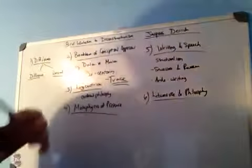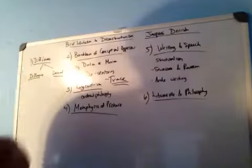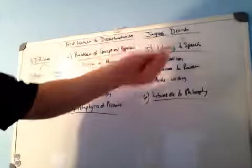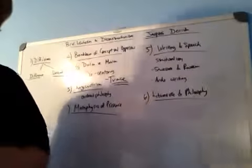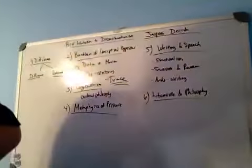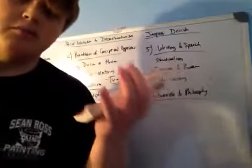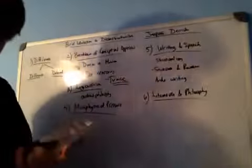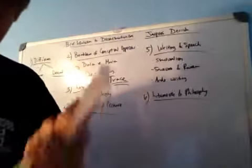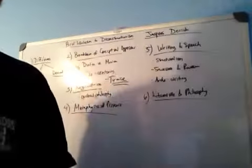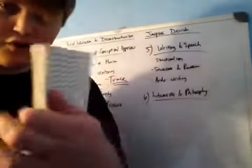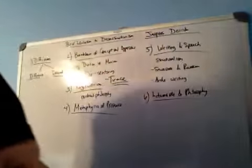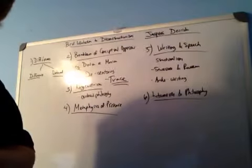This is basically a system of philosophy — if you want to call it a system — created by Jacques Derrida. I'm going to show you a couple of books to read. 'Speech and Phenomena' has a lot of essays which critique the phenomenology of Edmund Husserl. He was influenced by phenomenology but had many criticisms of it. It also has the essay in the back called 'Différance.'